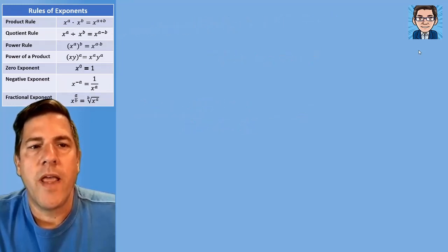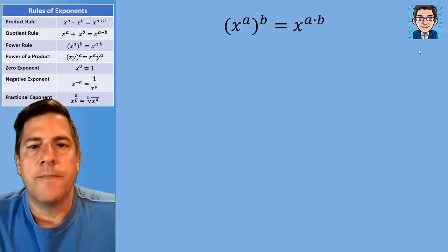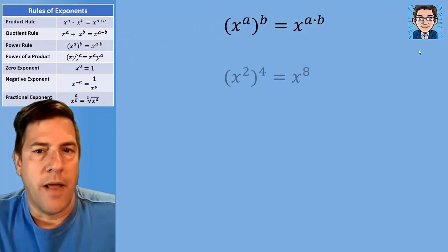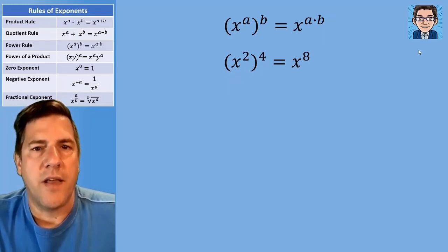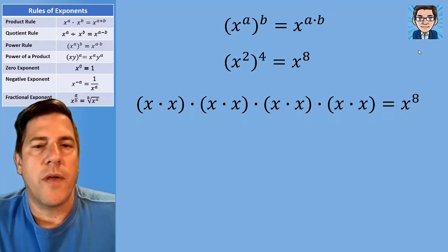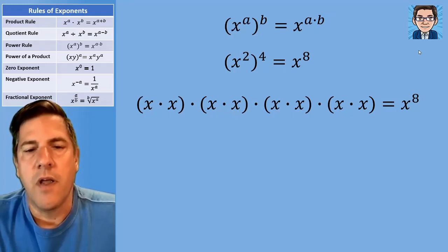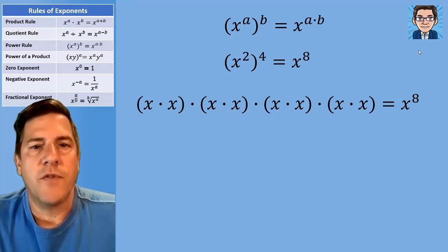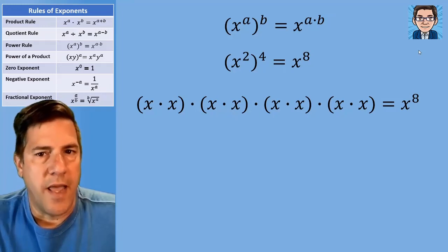When we raise to a power, we're going to end up multiplying. So x squared to the fourth is going to be two times four, or x to the eighth. Visually, we've got x squared and the number of times that we're multiplying it together is four. So we've got to do two times four to get the total number of times we're multiplying — eight.